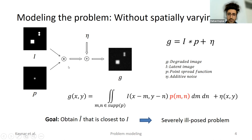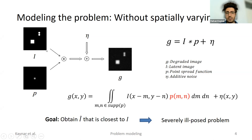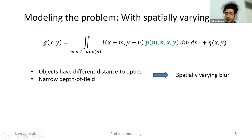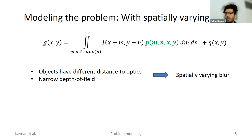The problem is that this is a severely ill-posed inverse problem, and we need special regularization or assumptions. The point spread function P is modeled as constant across the image, but this is not realistic because objects in the scene have different distances to the optics — they are not all in the same focus plane. These microscopes also have a narrow depth of field, so we generally don't know the blur level, and the blur varies spatially across the image.